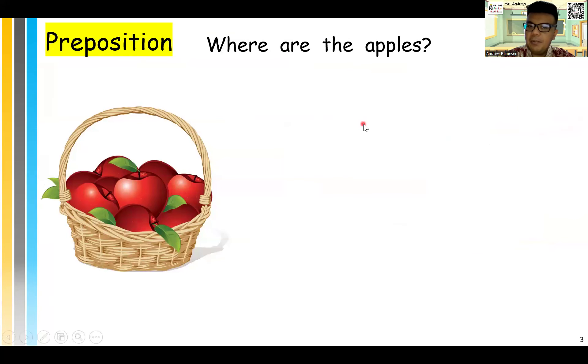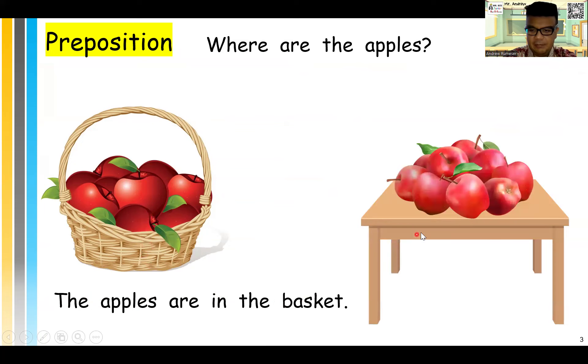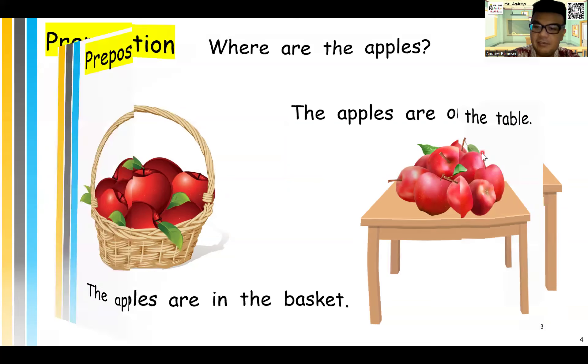Next, where are the apples? If they're here, we say the apples are, like this, in. That's right. You go in. You go inside the basket, right? The basket. What if it's like this? Where are the apples, kids? The apples are on, right? On top of the table, right? On. Touching the table like this. On the table. That's right.